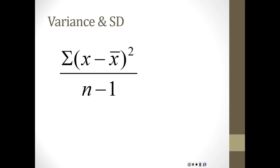Variance is what you get before you take the standard deviation — it's the average squared deviation. We write this as the sum of (x minus x-bar) squared, divided by n minus 1 for samples or n for populations. For each observation, take the observation minus the mean — not mean minus observation — so that values below the mean get a negative deviation and above get a positive one. You square each deviation, then sum all the squared deviations together.